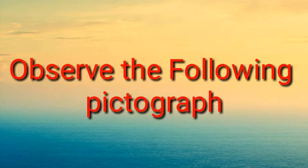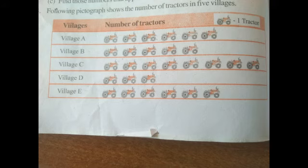You observe the given pictograph and answer the questions given there. First column you can see some village names: Village A, Village B, C, D, E. Next column the number of tractors. One picture gives one tractor. So using this pictograph we can give the answer for the questions.